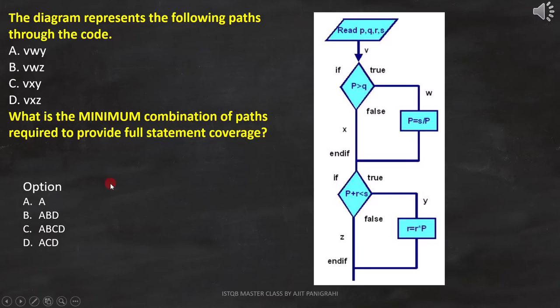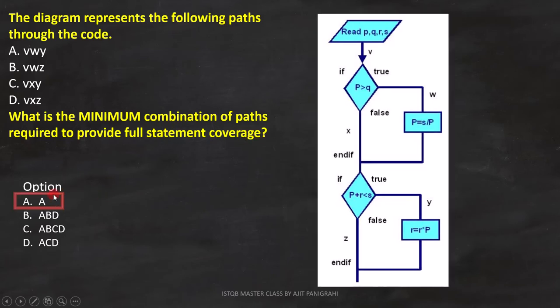Let's first see option A. In option A, we have only one combination, which is A. And A combination covers paths V, W, and Y.